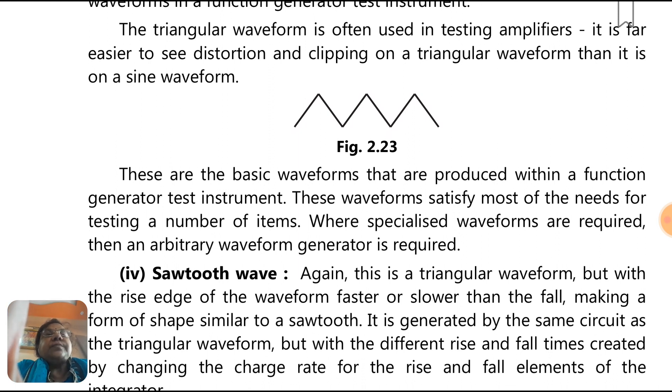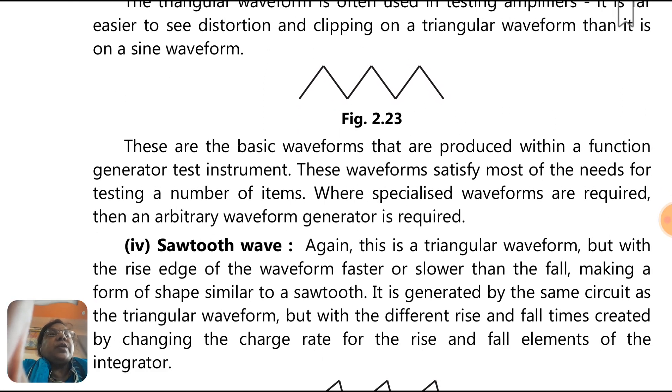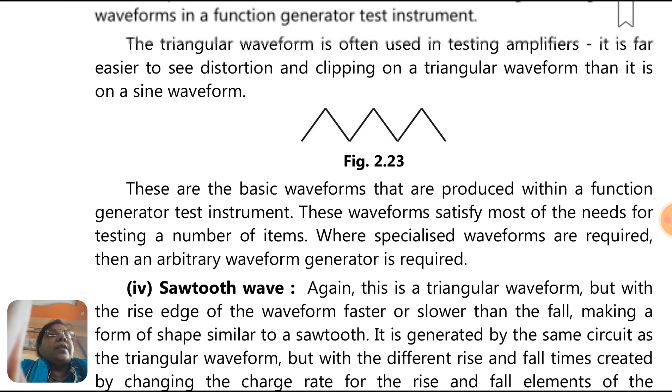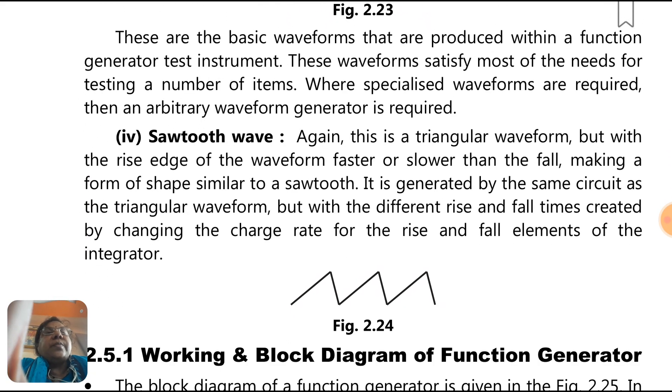It is far easier to see the distortion and clipping on a triangular waveform than it is on a sine waveform. These are the basic waveforms that are produced within a function generator test instrument. These waveforms satisfy most of the needs for testing. For a number of areas where specialized waveforms are required, then an arbitrary waveform generator is required.